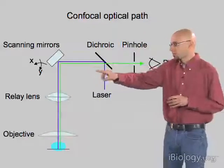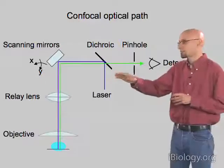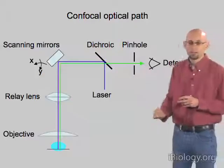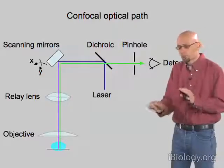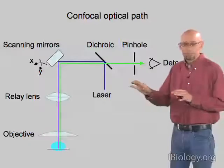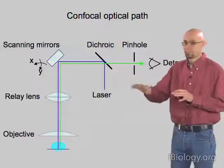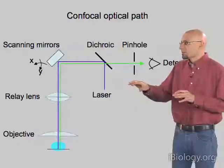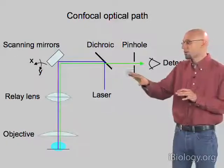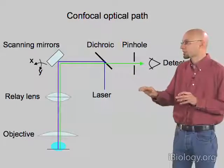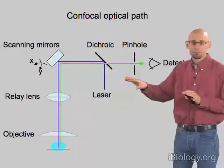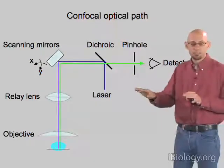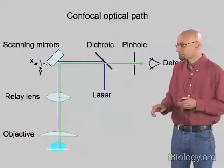All we need is a dichroic mirror — this 45-degree mirror — which separates the emitted light from the laser. We can then pass that through our pinhole, and it will reach the detector regardless of where it came from on the sample. By using the same pair of scanning mirrors twice — once to scan the illuminated light, and a second time to de-scan the emitted light — we can keep our pinhole fixed. The emitted light will always come back along the same path regardless of where it came from in the sample. So we just have a single fixed pinhole, put a detector behind it, and we can see the emitted light regardless of where it came from.